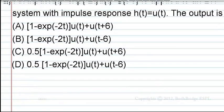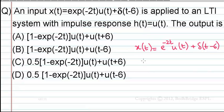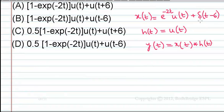Here, x(t) = e^(-2t)·u(t) + δ(t-6) and h(t) = u(t). What we need to find is y(t). The output y(t) is nothing but x(t) convolved with h(t). The input and the impulse response are given, so the output is the convolution of the input and the impulse response.